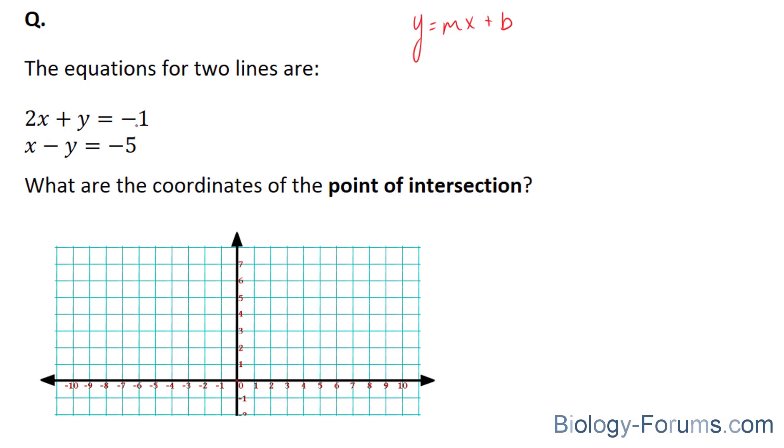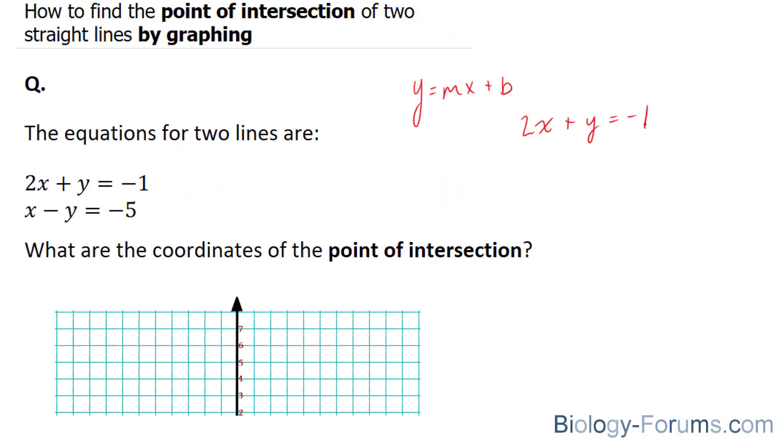I'll start off with the first one. What I'll do is isolate for y. So I'll write it out right here for you to see clearly: 2x plus y equals negative 1. What I'll do is place it in this format by isolating for this, negative 1 minus 2x.